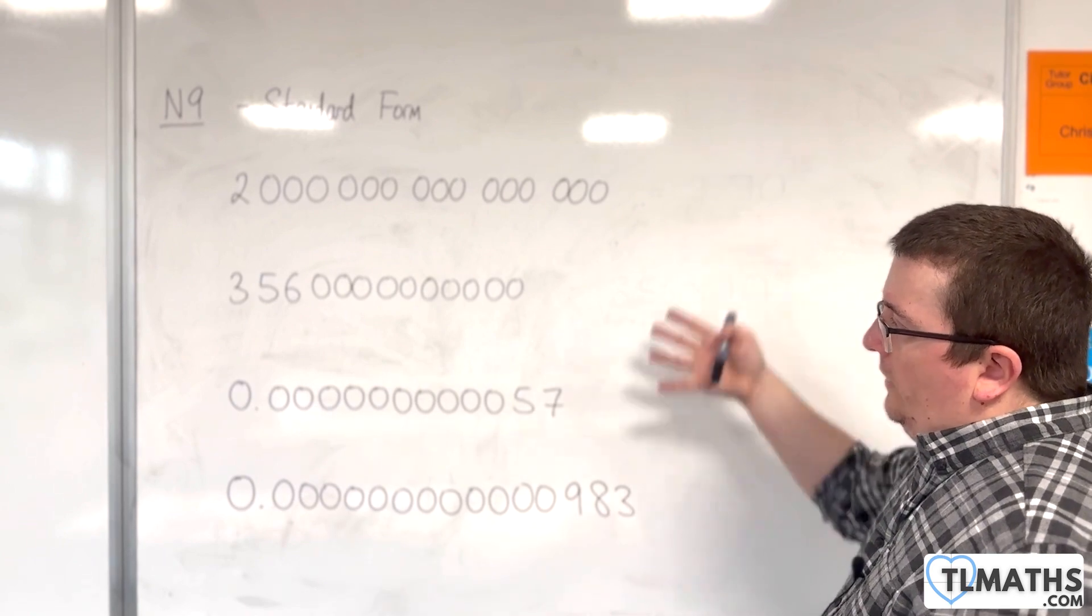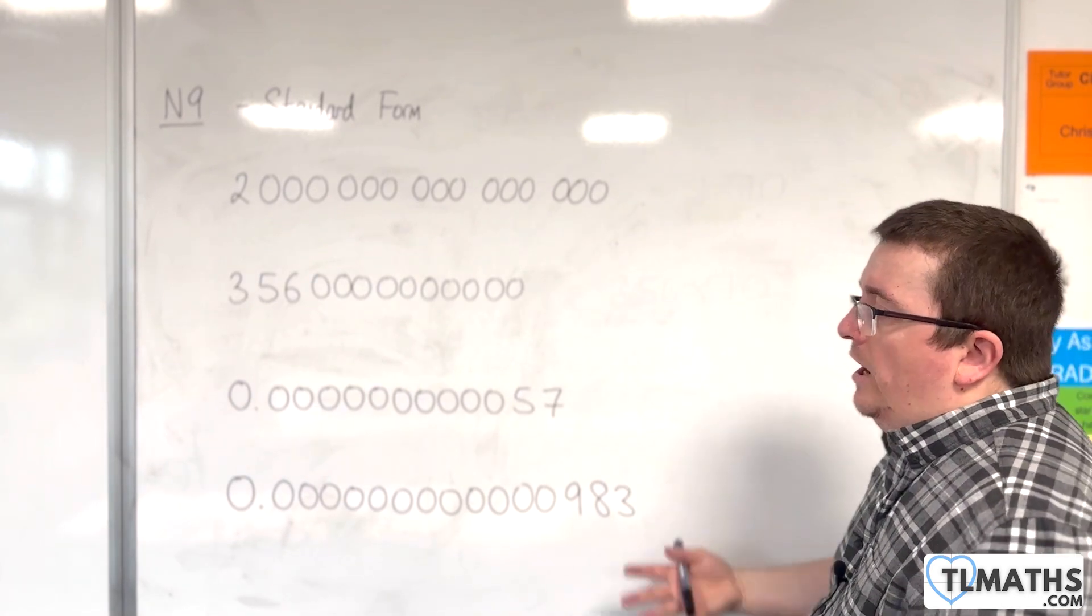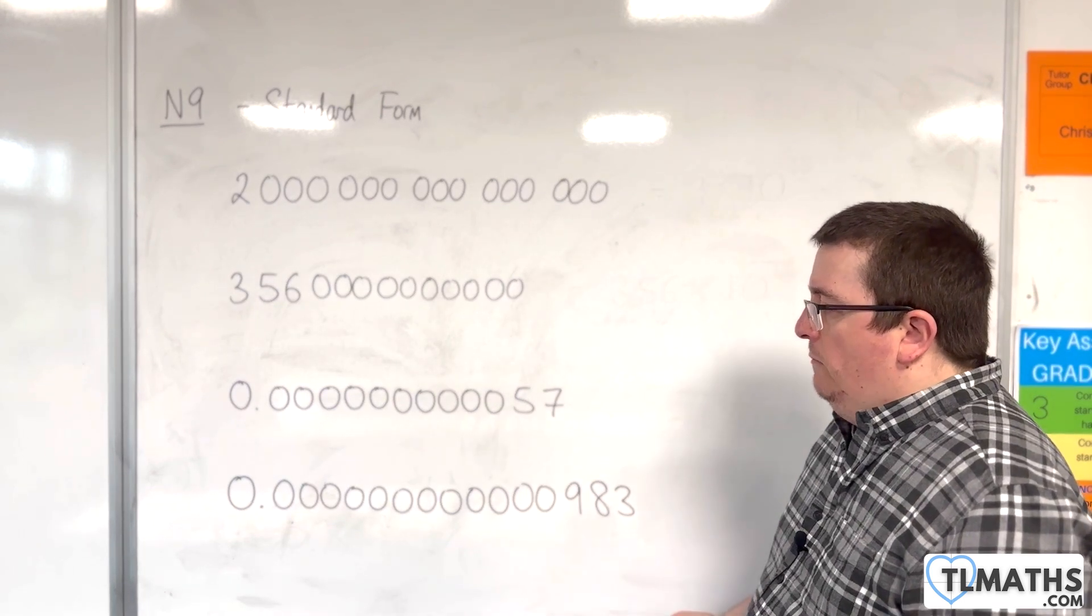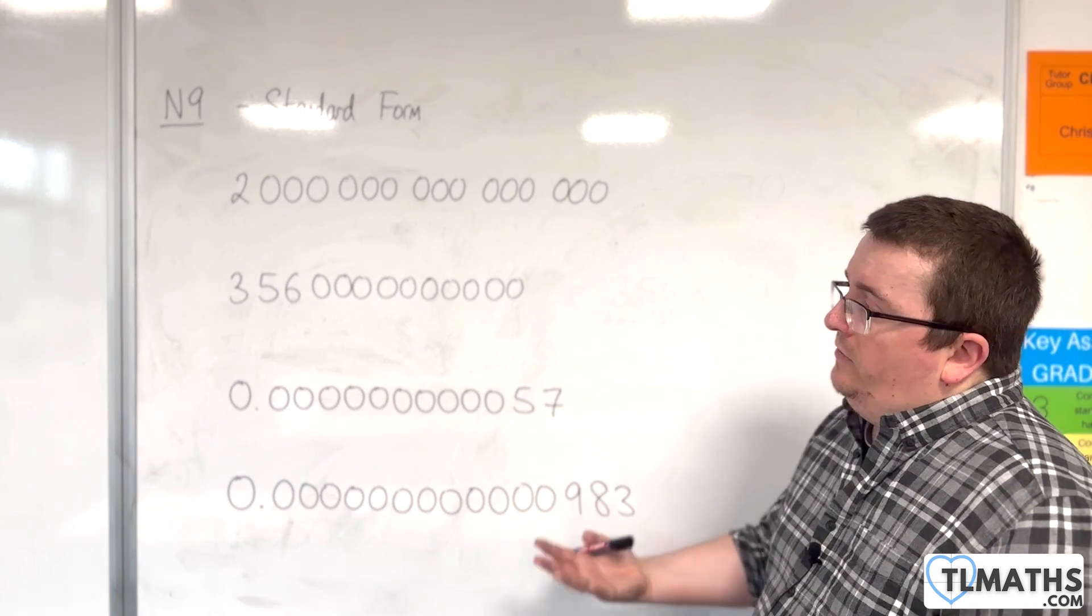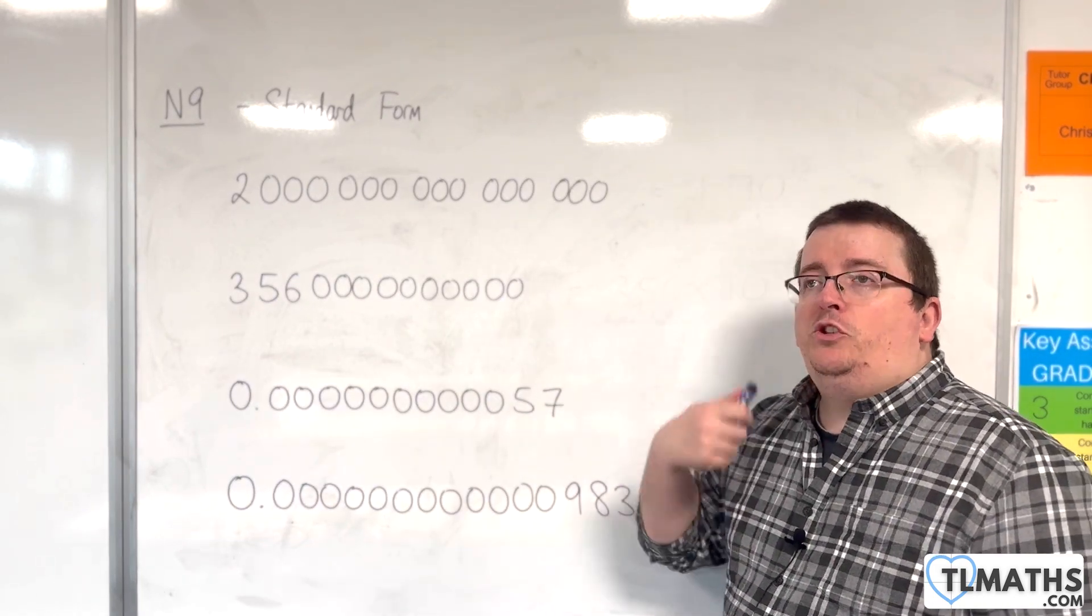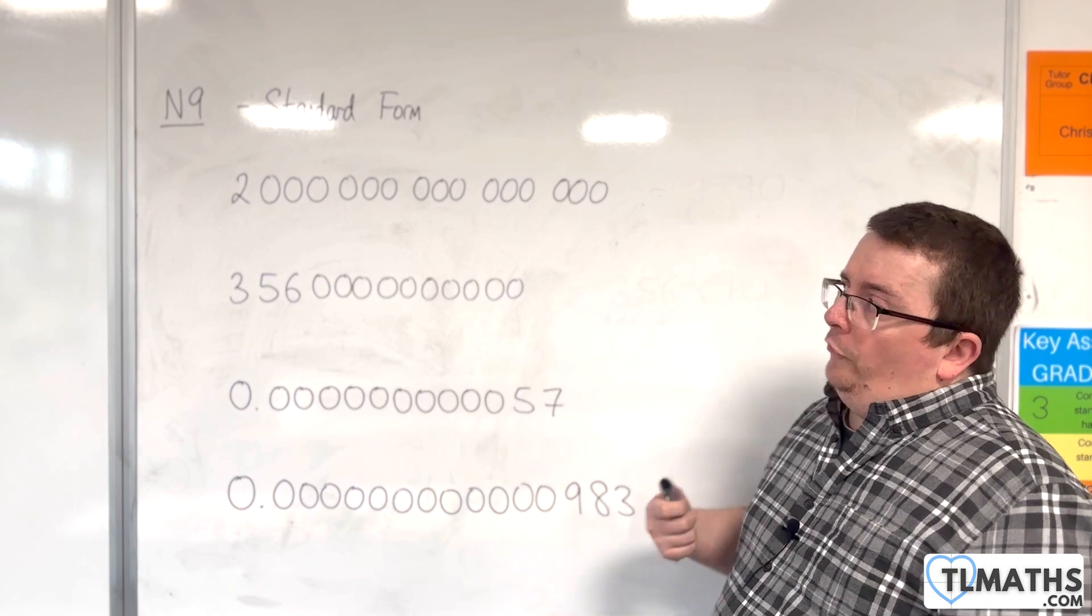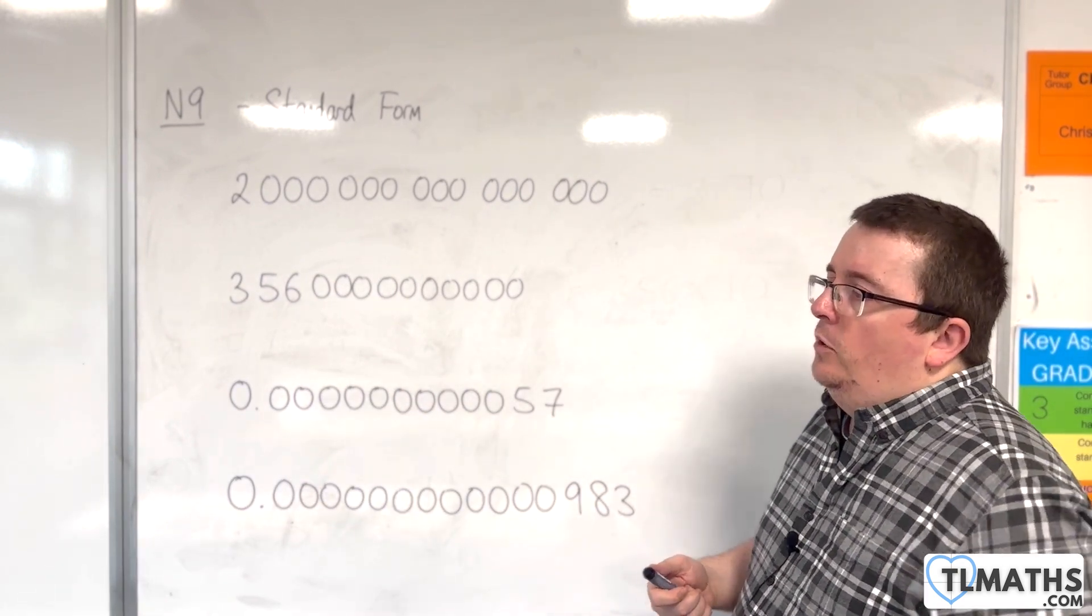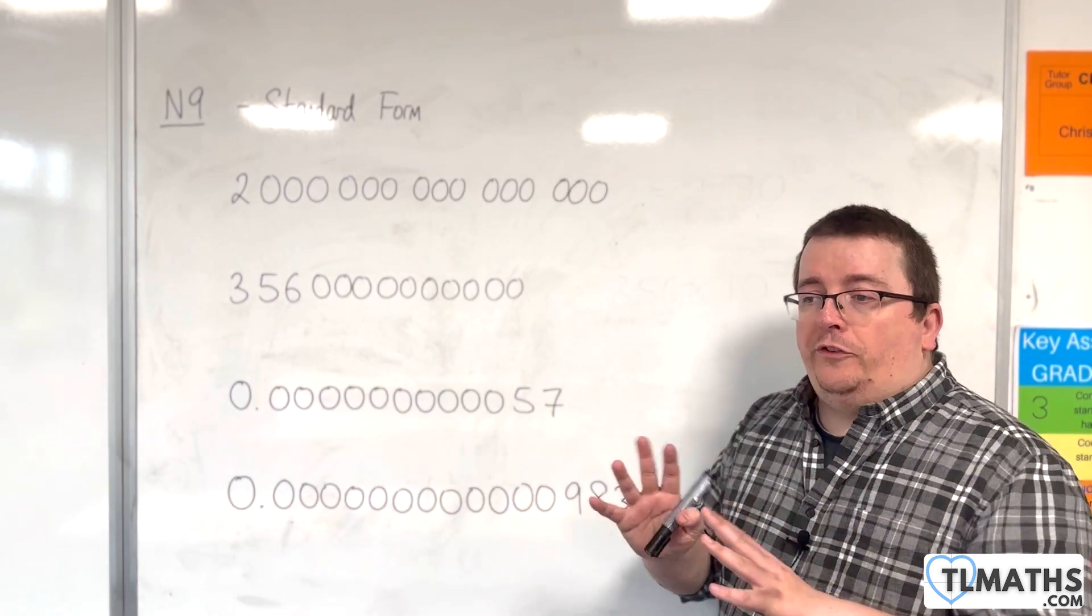As they stand, they're quite cumbersome to work with. Really what I'm looking for is an alternative way of writing them down that will make it easier for me to work with them, but also easier for me to compare them. So I could compare easily orders of magnitude.